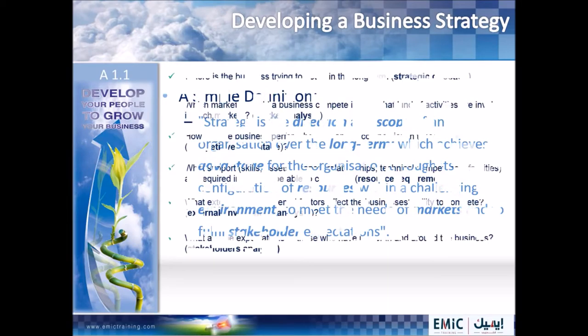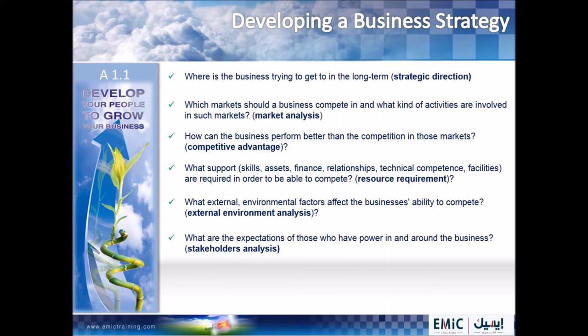To produce a clear strategy, you need to consider six steps in sequential order. The first thing you need to define is your strategic direction: where is the business trying to get to in the long term? The second thing is you need to conduct a market analysis: which market should you compete in, and what kind of activities are involved in those markets?